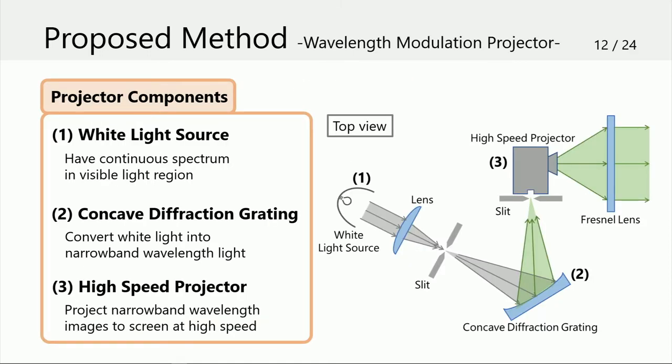Next, let me explain about the projector. The wavelength modulation projector is composed mainly of a white light source, a concave diffraction grating, and a high-speed projector. The light source emits white light to the concave diffraction grating. The grating converts white light into narrow band wavelength light and feeds it into the high-speed projector. Thus, the projector projects narrow band wavelength images to the screen.